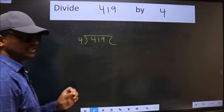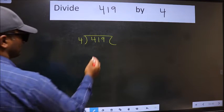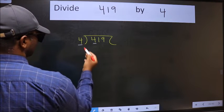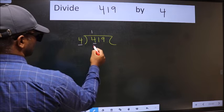This is step 1. Next, here we have 4, and here also 4. When do we get 4 in the 4 table? 4 once is 4.